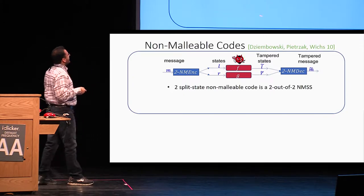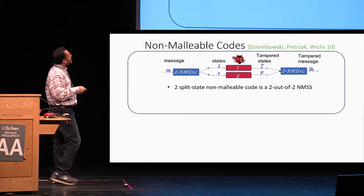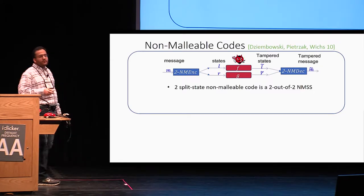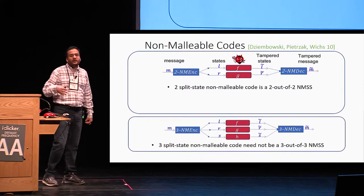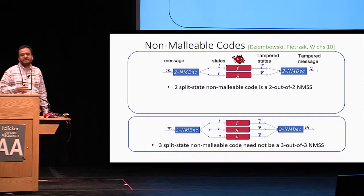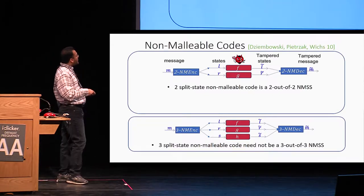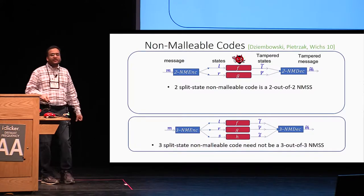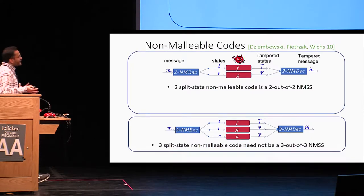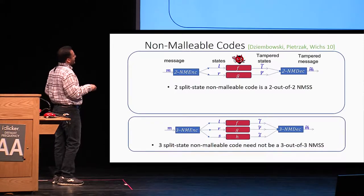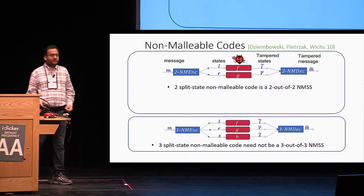Nonetheless, it is possible to show that two-split-state non-malleable codes are also two-out-of-two non-malleable secret sharing. But such an implication does not hold when the number of states grows beyond two. In particular, a three-split-state non-malleable code need not be a three-out-of-three non-malleable secret sharing.